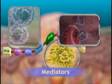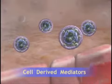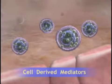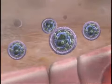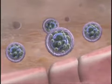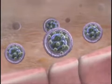Concurrent with the vascular and cellular stages, chemical mediators release bioactive agents that act to mediate the inflammatory response. Mediators are derived from cells or from plasma. One of the first mediators of an inflammatory response is a cell-derived mediator, histamine, found in high concentrations in the mast cells of connective tissues adjacent to blood vessels, as well as in blood basophils and platelets.